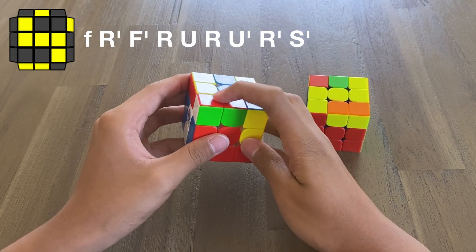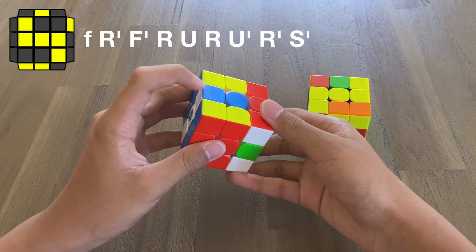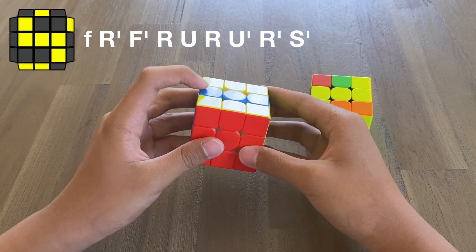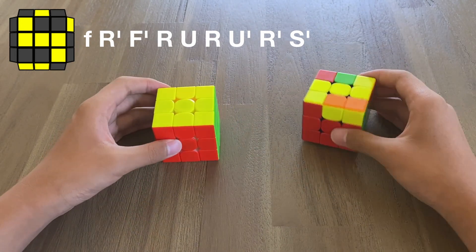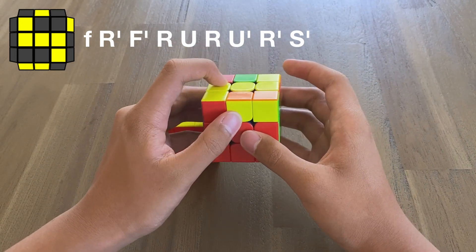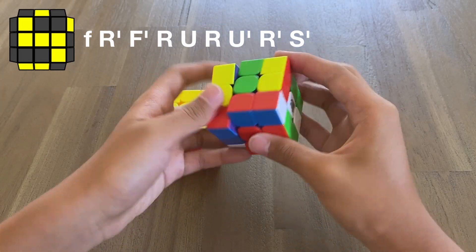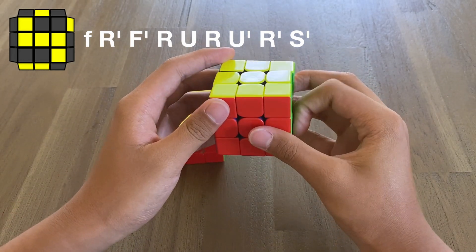You see this F2L pair, you want to insert it. And then you want to do a slice move back. Similarly, on the left side, you do the mirror. Insert the F2L pair, slice back.